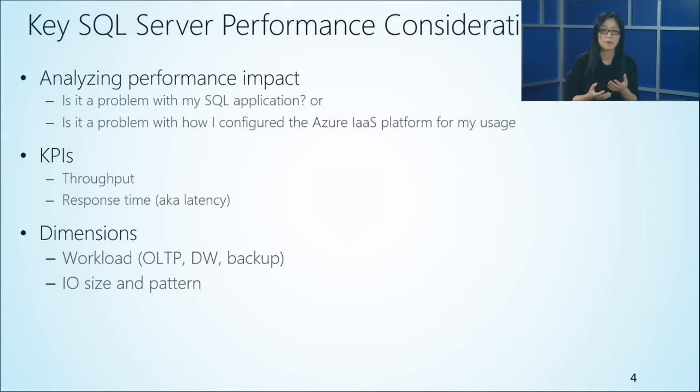We see two main things: throughput and latency — or in the context of workloads, what's the response time users observe. There are multiple dimensions: OLTP workloads, typically 8K in size with random reads or writes; data warehousing workloads, which are much bigger in size and mostly sequential; and backup workloads, which behave differently in this environment. You need to pivot dimensions like IO size and random vs. sequential to better understand performance.